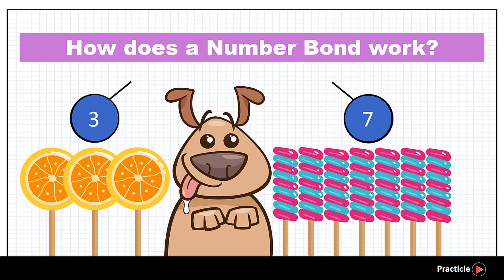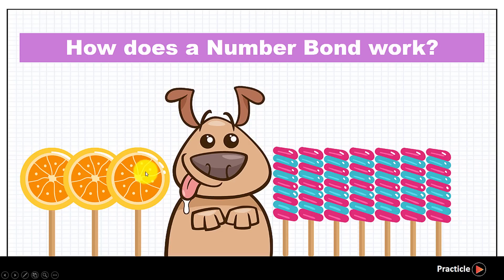Okay, when we put these 2 parts together, 3 candies and 7 candies, how many candies do you think we have all together? Let's count, alright? We have 1, 2, 3, 4, 5, 6, 7, 8, 9, 10. 10 candies in all.